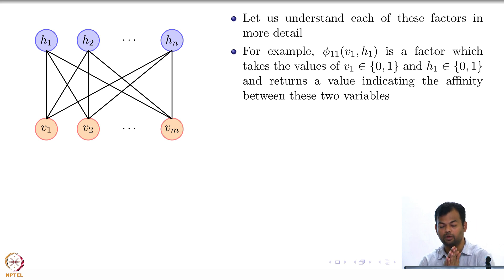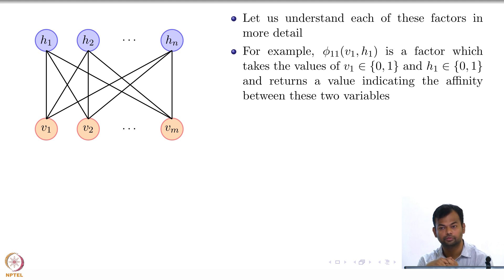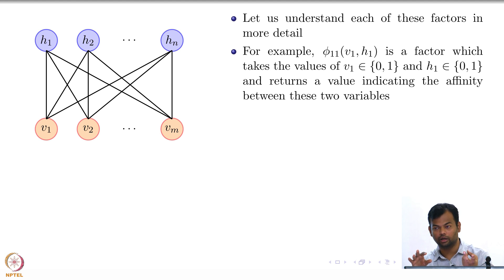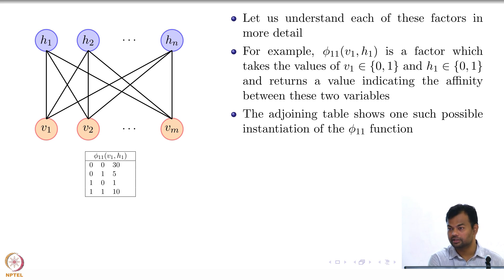Let us understand each factor in more detail. The factor φ₁₁ captures the interaction between v₁ and h₁. It takes as input the values of v₁ and h₁. How many such configurations are possible? 4, that is 2×2. For each of these 4 configurations it gives you one value. So φ₁₁ is actually a table, very similar to a conditional probability distribution table, with a value for all possible configurations of the two variables.